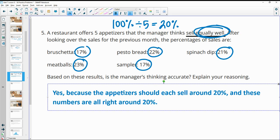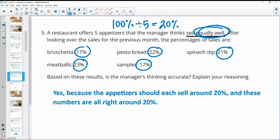We don't have one selling 40% of the time, one selling 5% of the time. They're all pretty close to each other, right? You don't have any outliers. So I would say yes, they sell pretty equally well.